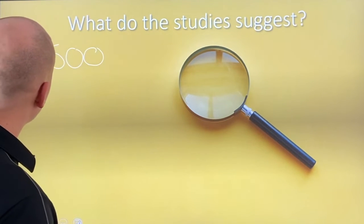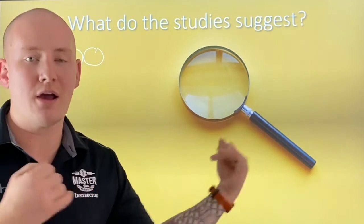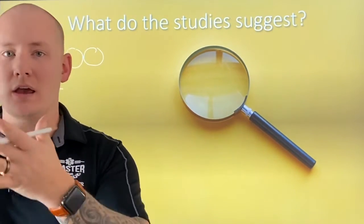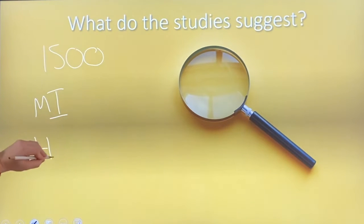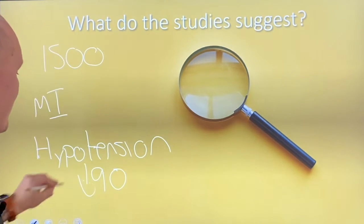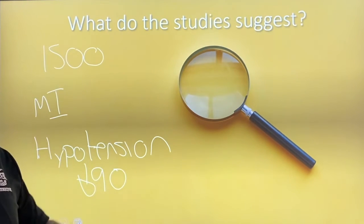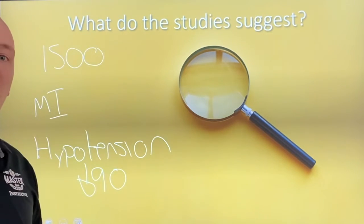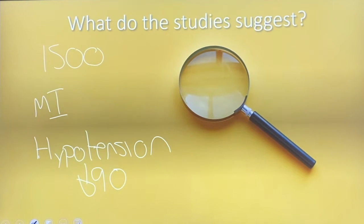They looked for 12-lead ECGs registering an MI or acute MI — regardless of whether it was an inferior, lateral, or anterior MI — they wanted to look at all MIs. They were looking specifically for hypotension, which they defined as a systolic blood pressure below 90. So 1,500 patients all registering an MI on their 12-lead ECGs, and the study was looking for any hypotension in those patients.